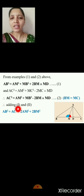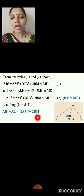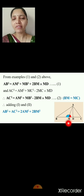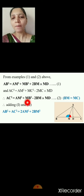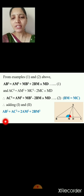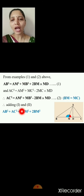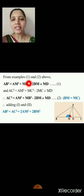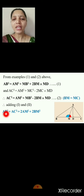Since BM = MC (M is the midpoint of BC), we substitute MC with BM in equation 2: AC² = AM² + BM² − 2·BM·MD. Now adding equation 1 and equation 2: AB² + AC² = AM² + AM² + BM² + BM² + 2·BM·MD − 2·BM·MD. The last two terms cancel, giving AB² + AC² = 2·AM² + 2·BM². Hence the Apollonius theorem is proved.